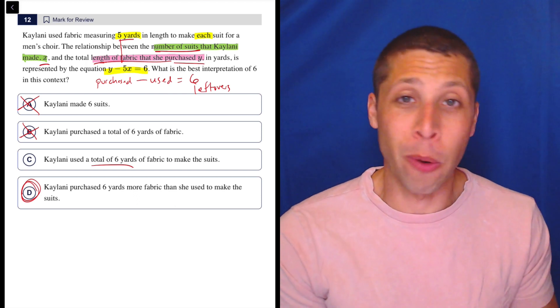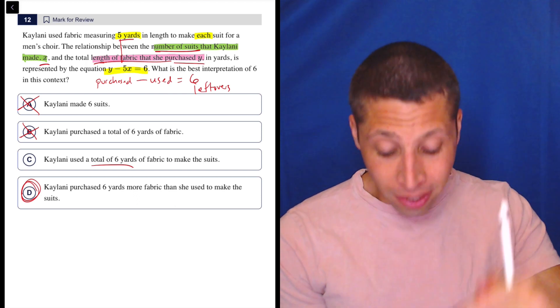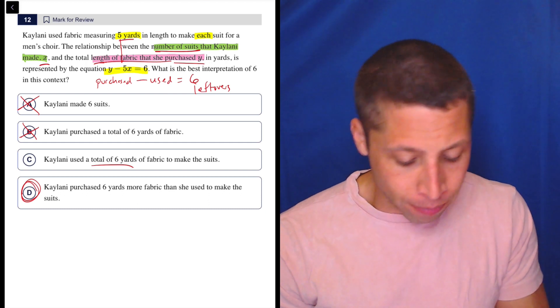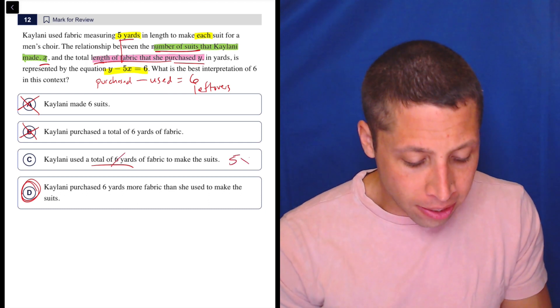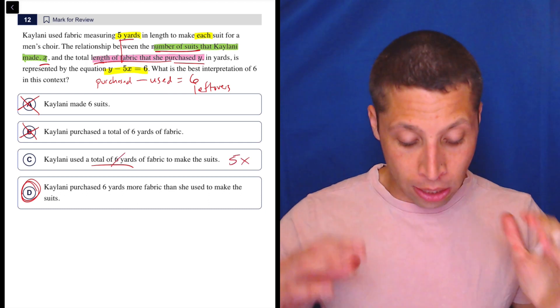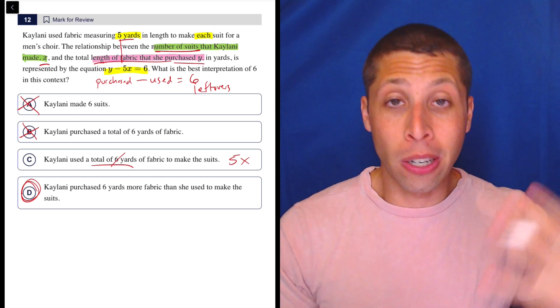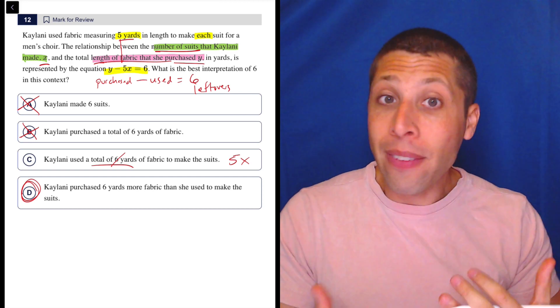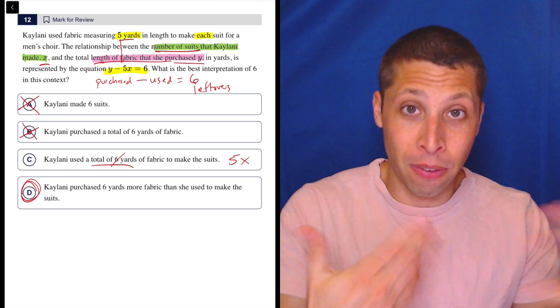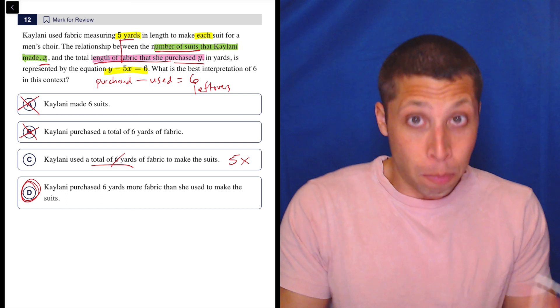I've kind of rewritten the equation in words now. C would be, aside from the six, this is the 5x. The number of suits she made times five yards per suit. That 5x is the total amount of fabric that she used, so it's part of the equation.